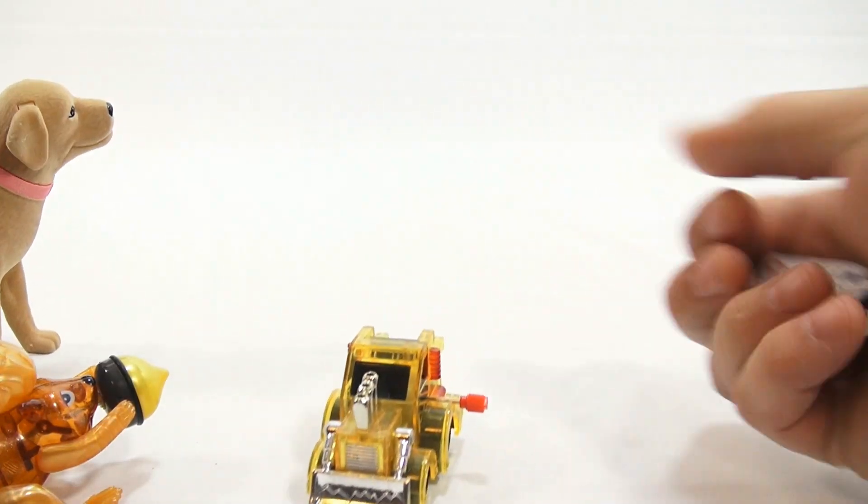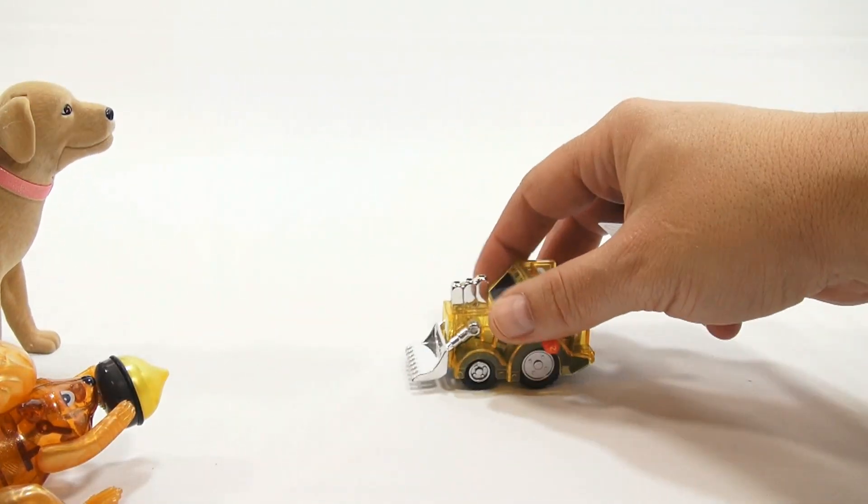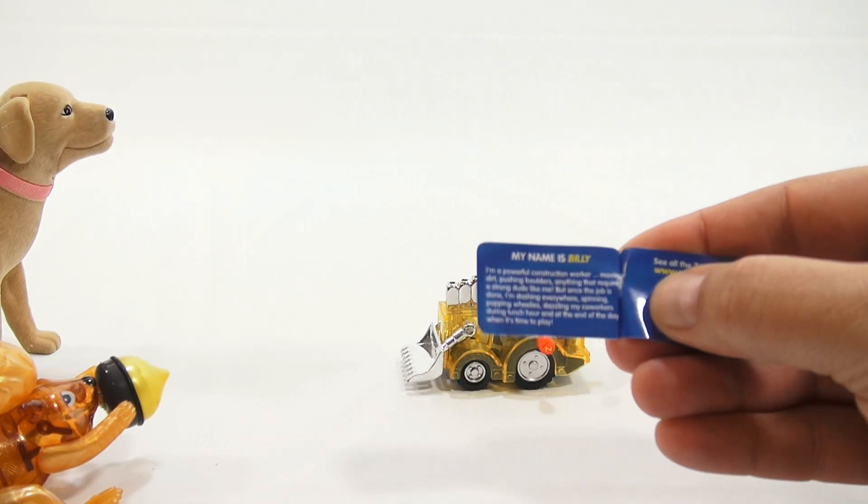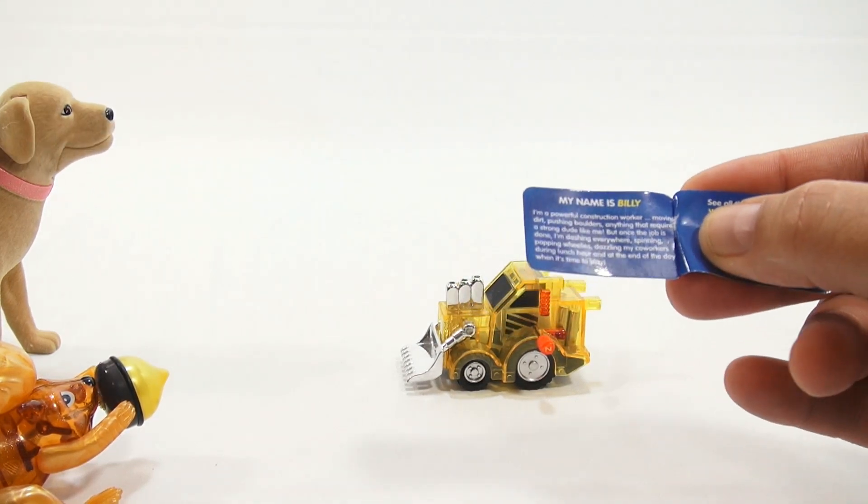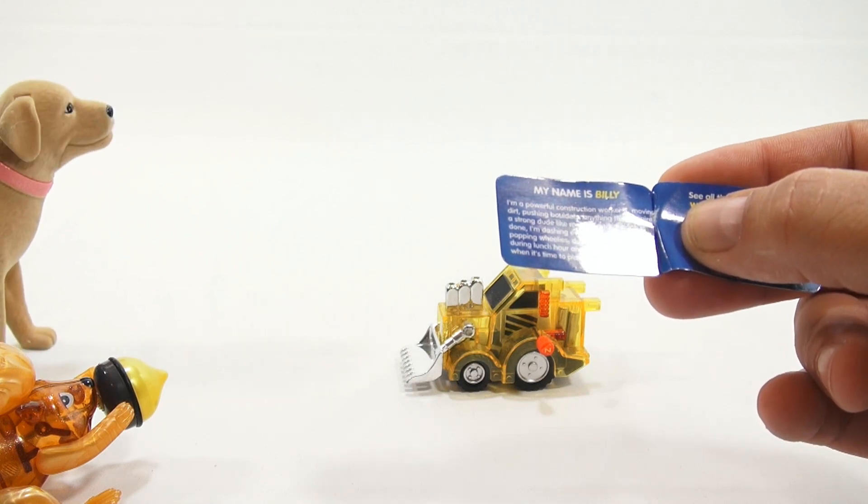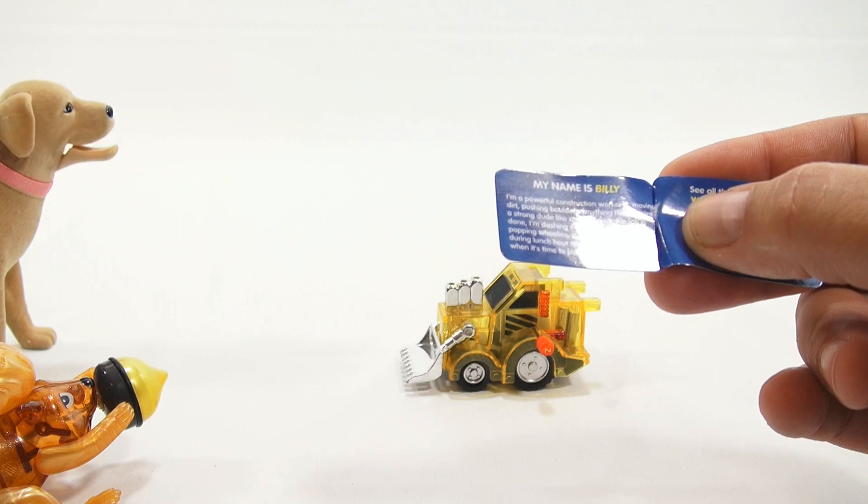Alright, so Zee, don't run away from me. Hold on a second. Alright, so this one is called Billy. Billy? Yeah, Billy. It says, I'm a powerful construction worker, moving dirt, pushing boulders, anything that requires a strong dude like me. He's a dude.